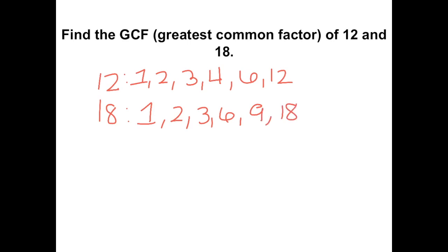So the greatest factor that they have in common would be 6. So the greatest common factor of 12 and 18 is 6.